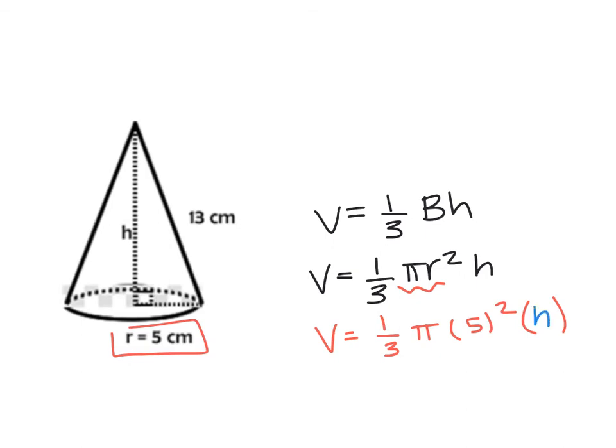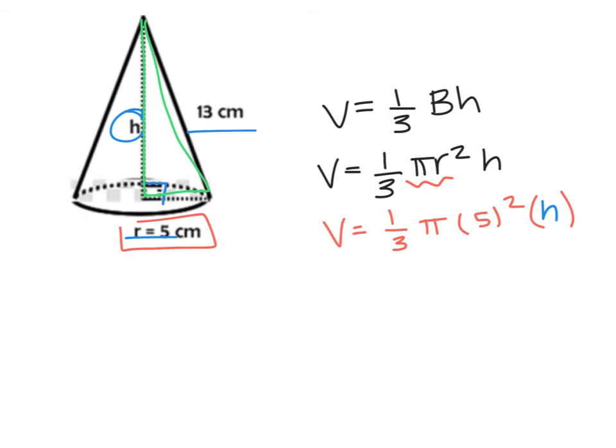So remember a² + b² = c², so I have 5² + h² = 13². I just type that into my calculator, and I get 25 + h² = 169. I take away 25 from both sides, and I get h² = 144.